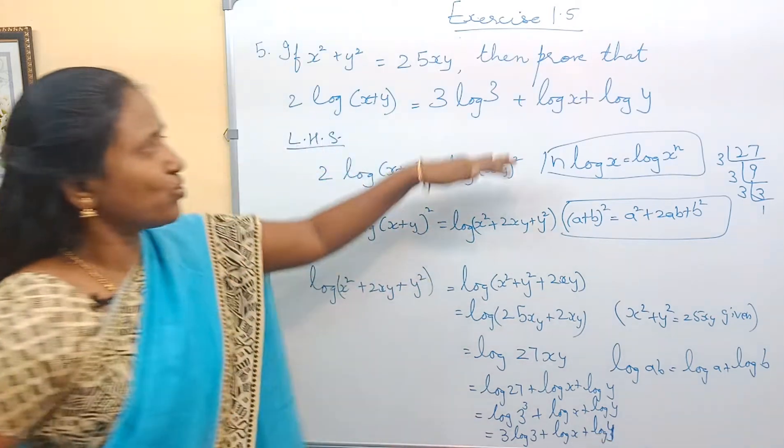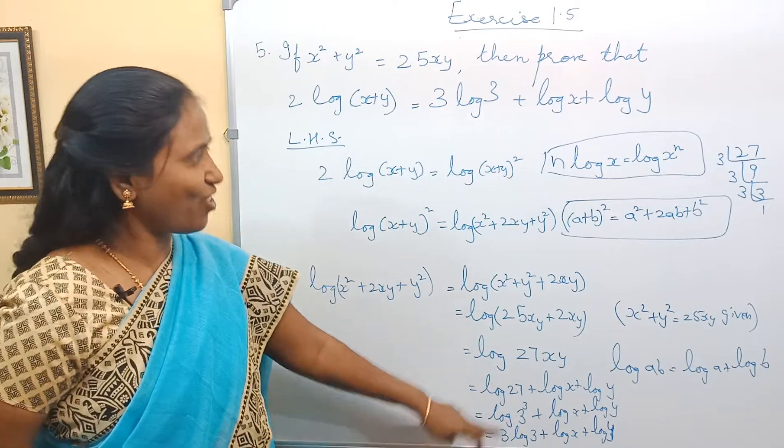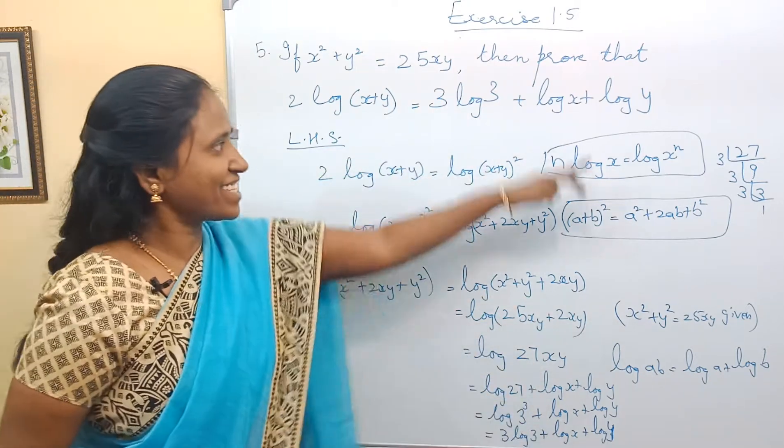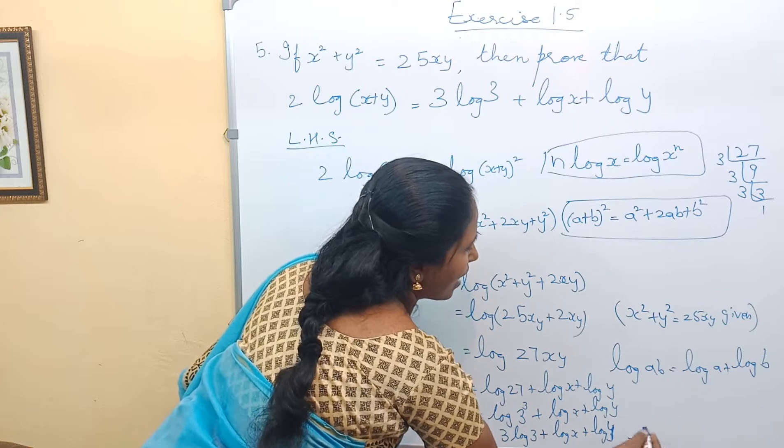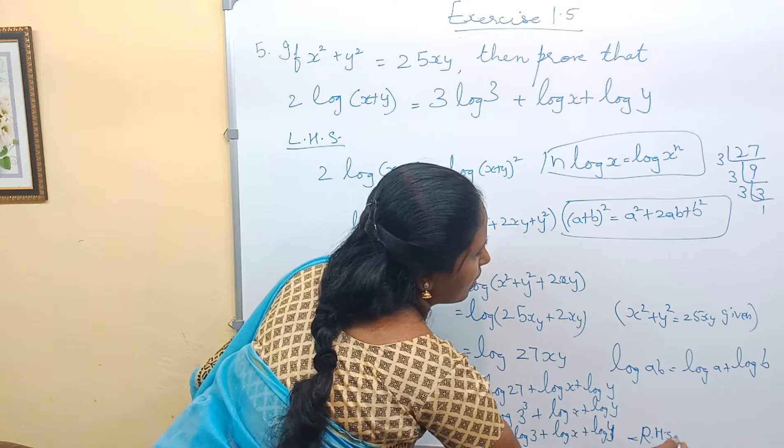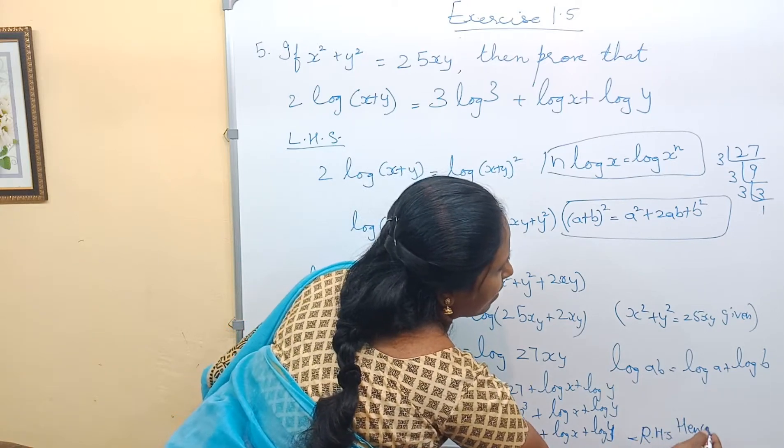So is it equivalent to what we have to prove? It is 3 log 3, log x, log y, which is equal to the RHS. Hence, proved.